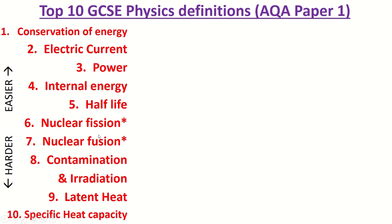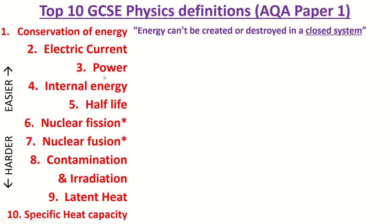GCSE Physics paper one is tomorrow and if you want to do well you need to know these key definitions for AQA. They start off easier and get harder, and if you do combined science you do not need to know number six or seven related to nuclear fission and fusion. So pause the video, grab a piece of paper, and see how many of these you know off the top of your head.